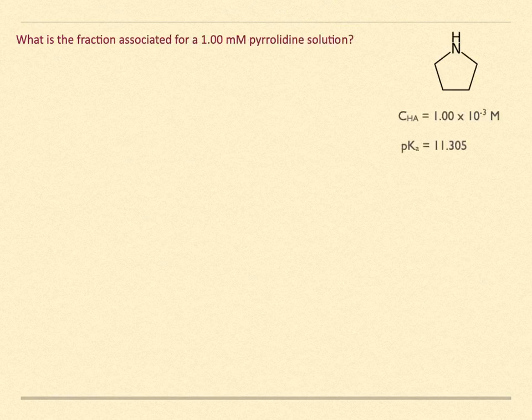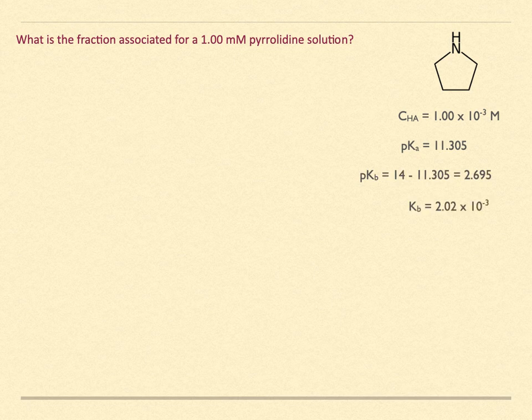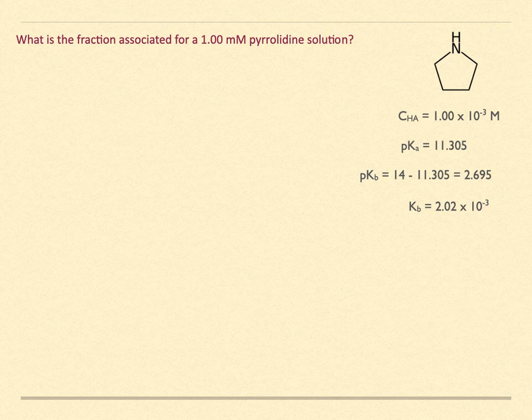When we look up the table for the appropriate values, we find a pKa of 11.305. This is for the conjugate acid, pyrrolidineum ion. We convert to the pKb as 14 minus 11.305, or 2.695, and that becomes a Kb of 2.02 times 10 to the minus 3.